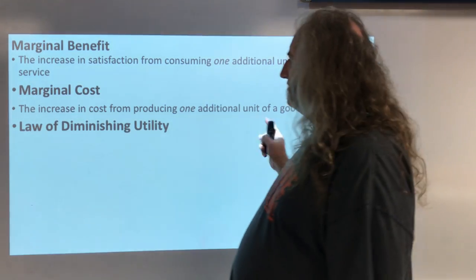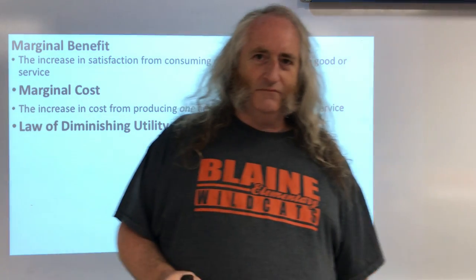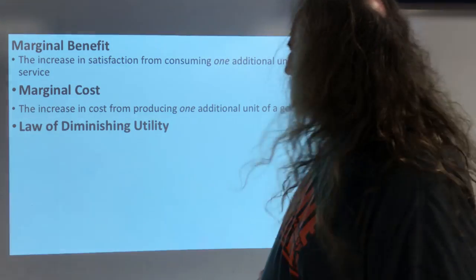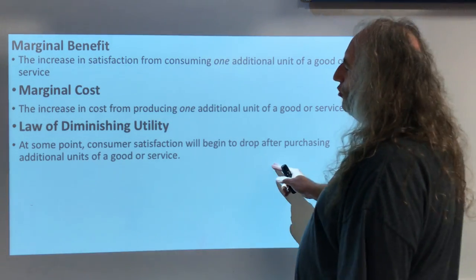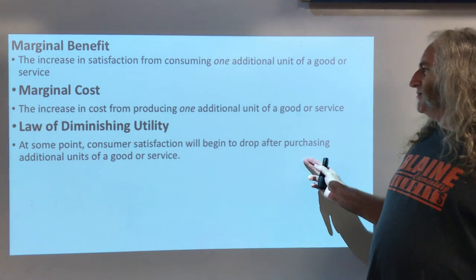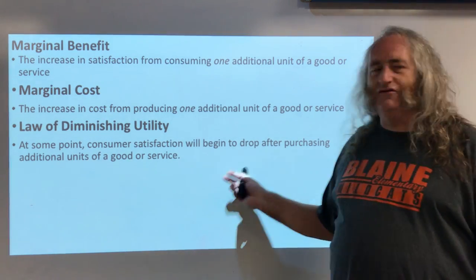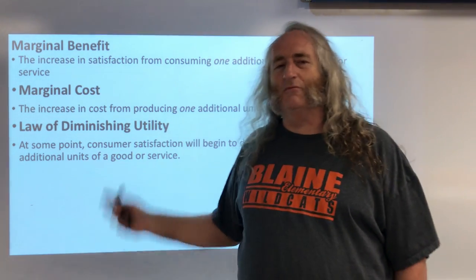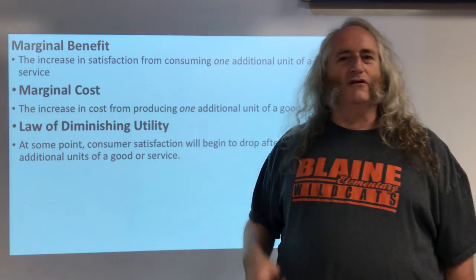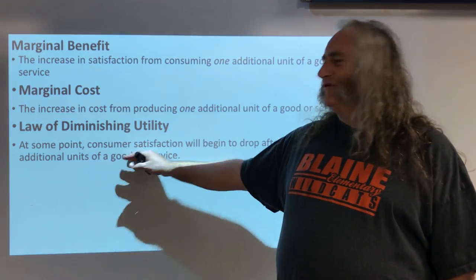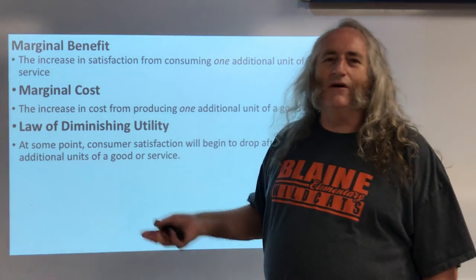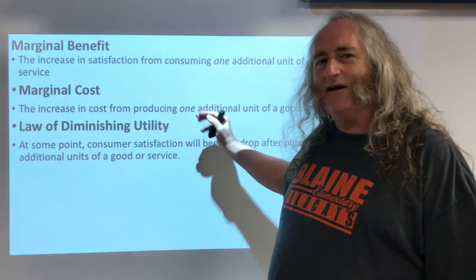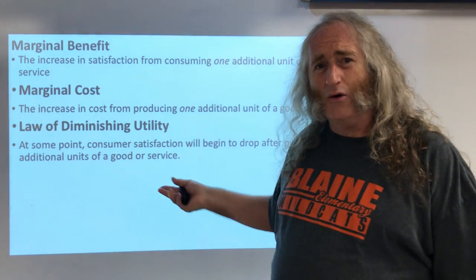The last thing we'll talk about today is the law of diminishing utility. Diminishing means to go away, and utility is satisfaction. At some point, consumer satisfaction will begin to drop after purchasing additional units of a good or service. So if you buy one cheeseburger at McDonald's, then one more, then one more, you eventually hit a point where you're not going to buy anymore — you're full. That's what the law of diminishing utility shows us: if we keep buying and buying, at some point you decide it's not worth it to buy one more.